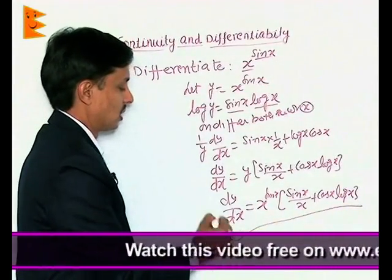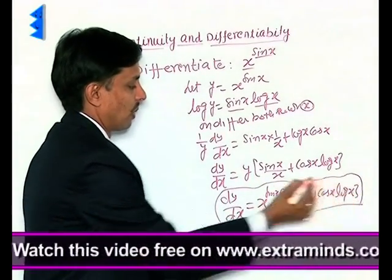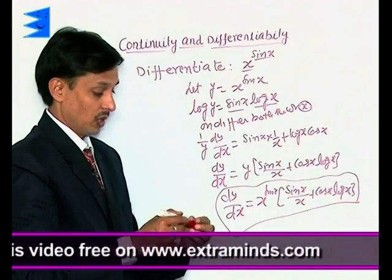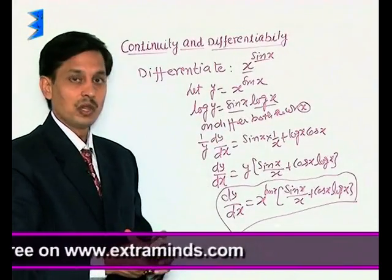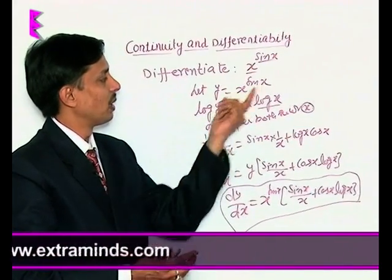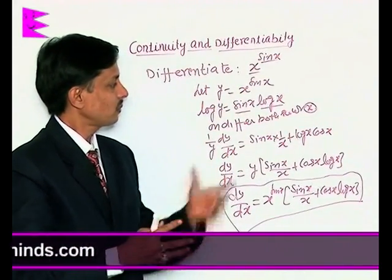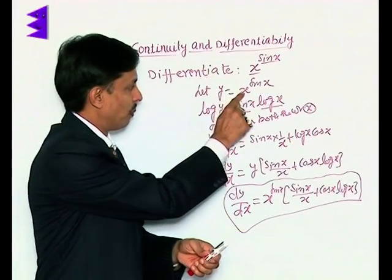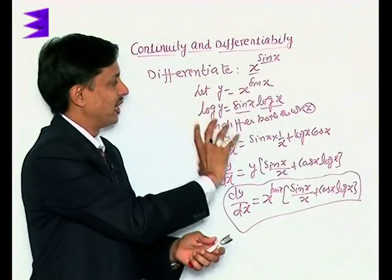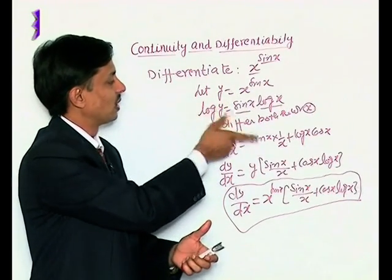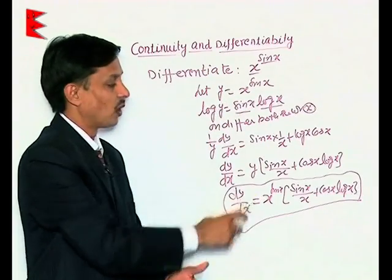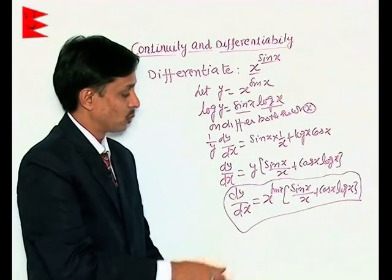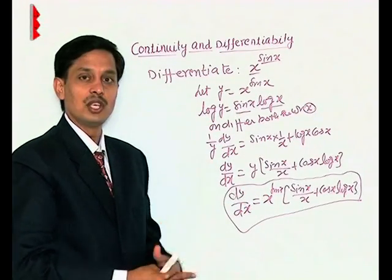So this is the derivative where the product rule was applied, but before applying the product rule, it was mandatory to bring the problem in the proper shape where the product rule can be applied. And for that, as base was variable and power was variable, we have taken the log both sides and followed the steps which I have shown you to obtain the differentiation of the problem.